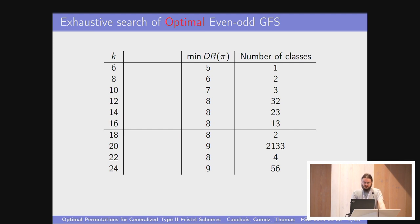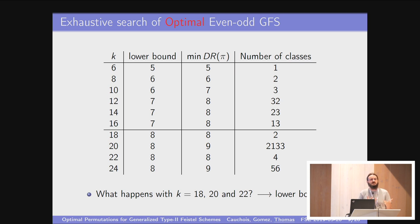So we did exhaustive search using these methods. Here from six to 24 are the best diffusion rounds of the best permutations that exist. Up to 16 are the results of Suzaki and Minematsu, and after that are our results. We also computed how many classes there are that are optimal. We can see something a little bit strange. For 18 blocks, there are only two optimal permutations. For 22, there are four, and they have a diffusion round of eight. But in between, there is 20 that has a diffusion round of nine, but there are a huge number of them. So what happens here? In fact, there is a problem with lower bounds.